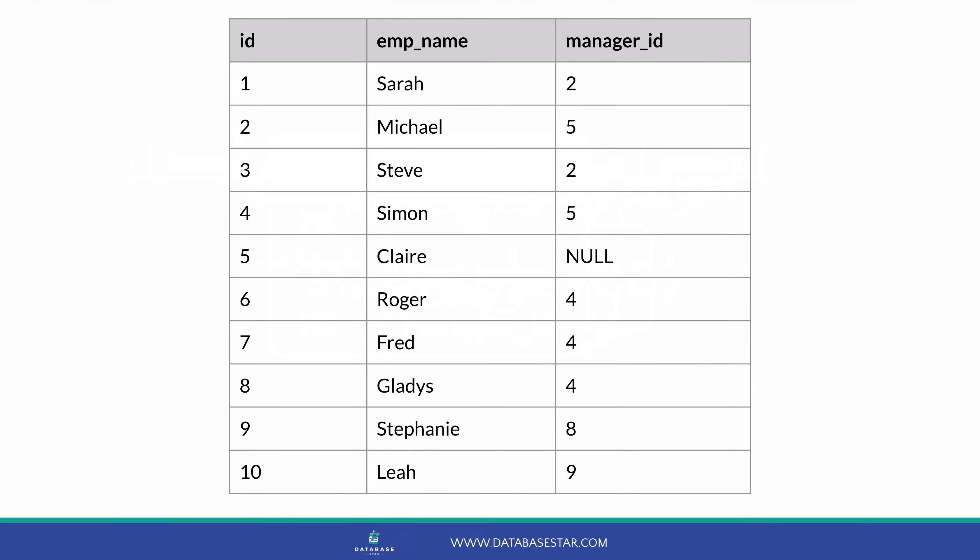For example, employee ID 1 has a manager ID of 2, which refers to employee ID 2 who has the name of Michael. Michael can have his own manager, which is another record in the table. So this is all well and good, but what does it have to do with a self-join?